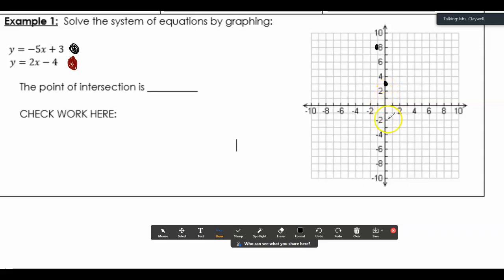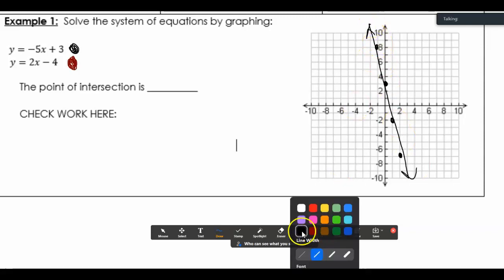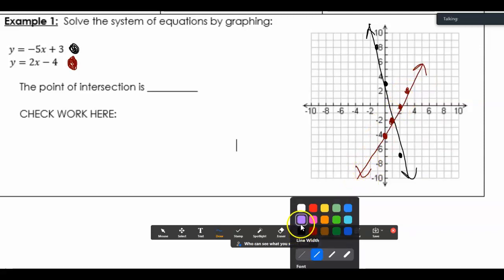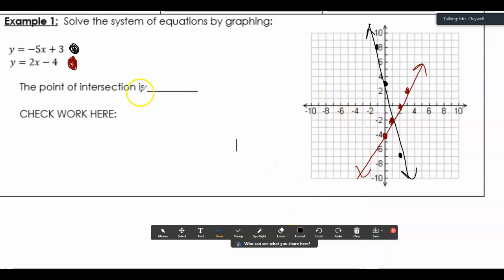I did a positive slope. And this is up 2 over 1. We can see that these intersect at 1, negative 2. Here.